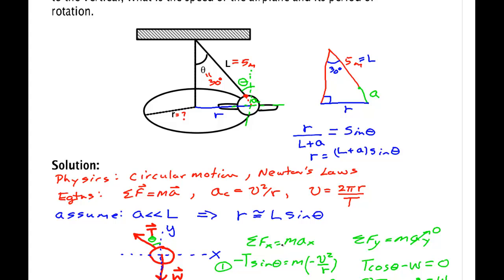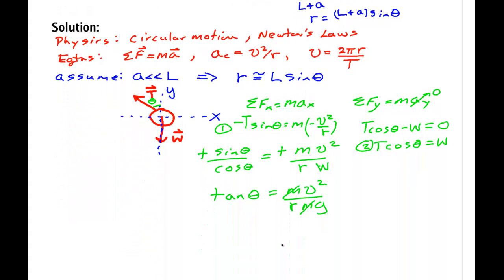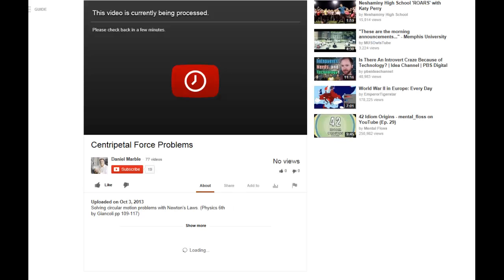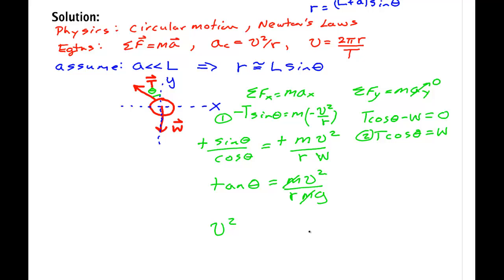Now what were they asking me for? They were asking me for V. So V squared is equal to R G tan of theta. So V is the square root of R G tan of theta. But I don't know R. I have a formula right up here: L sine theta. So I have the square root of L G sine theta tan theta.